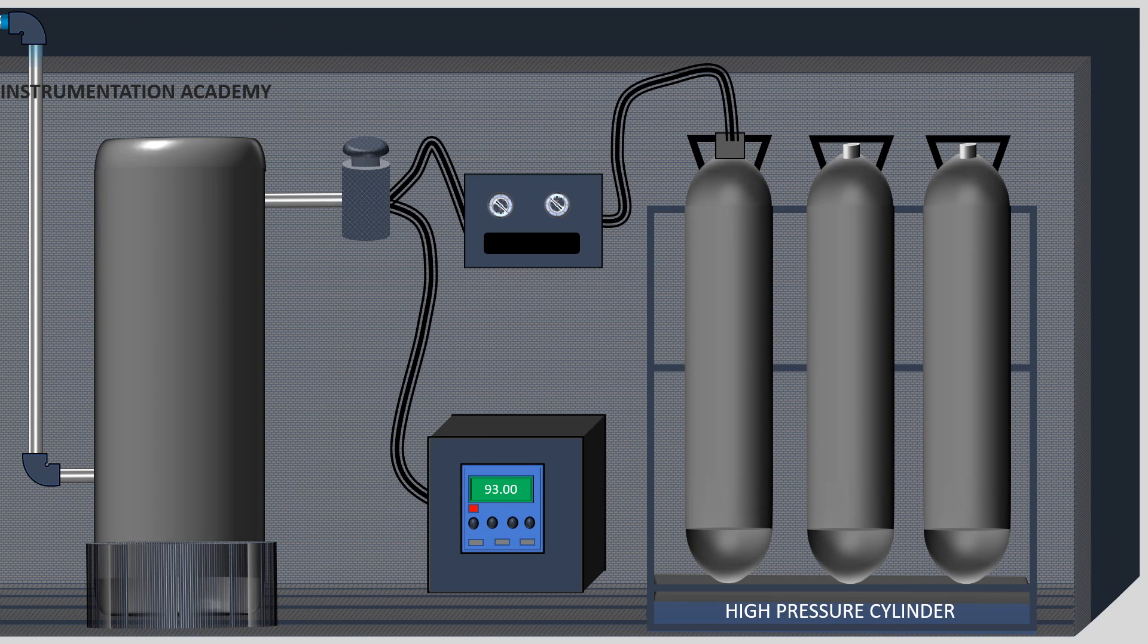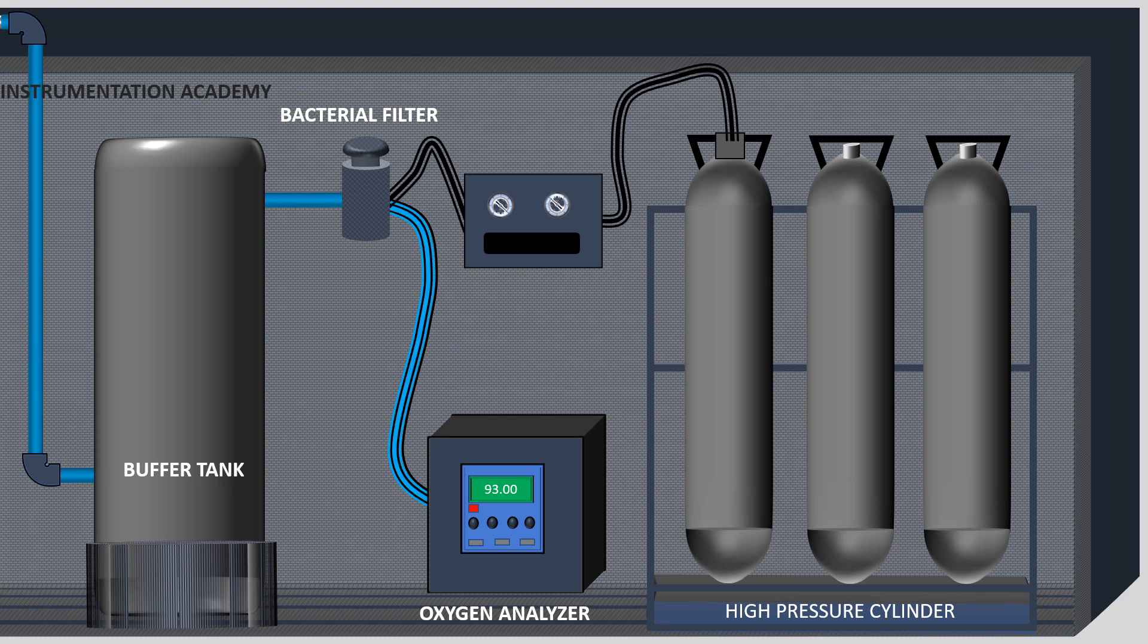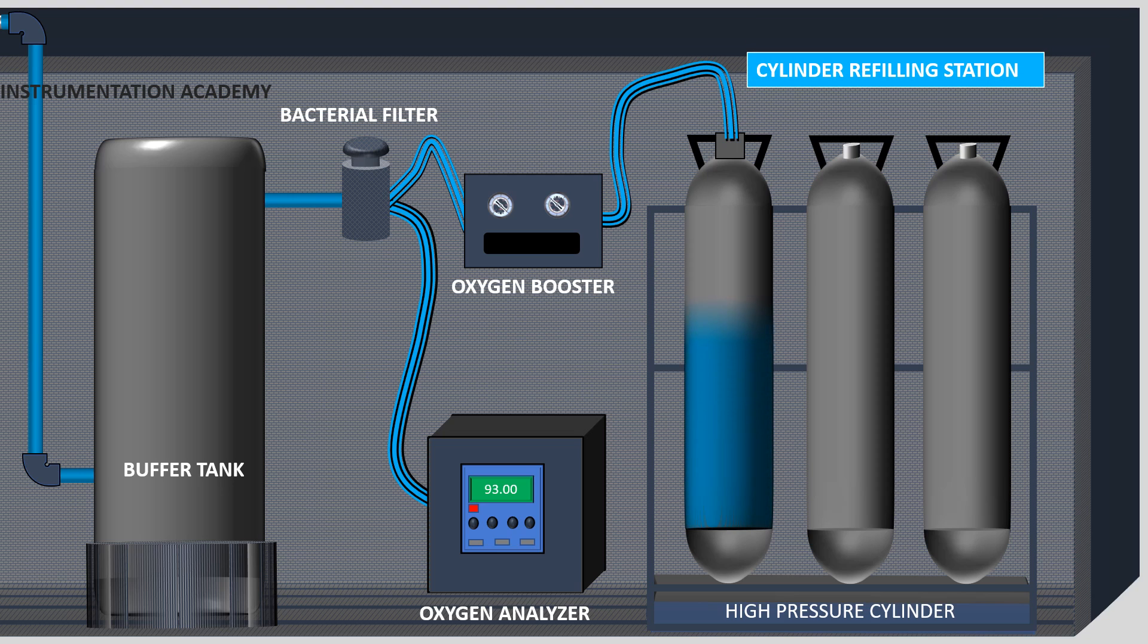The oxygen produced by the generator is stored in a buffer tank. From the buffer tank, oxygen is taken to the user end through a bacterial filter. An oxygen analyzer is used to check the purity of this produced oxygen. Oxygen booster is used to increase the pressure of the oxygen to meet various requirements of terminal user and this oxygen booster is connected to cylinder refilling station where oxygen cylinders are refilled.